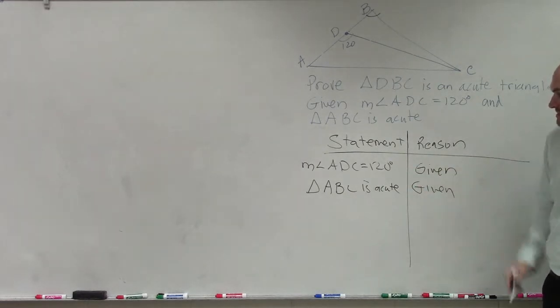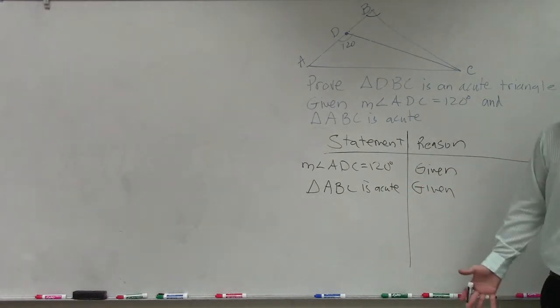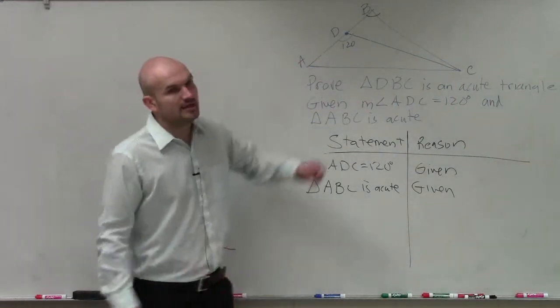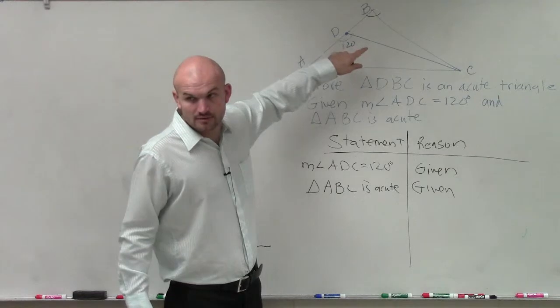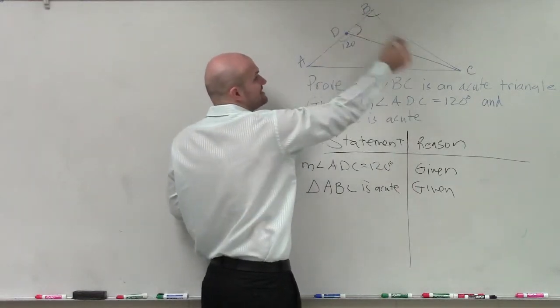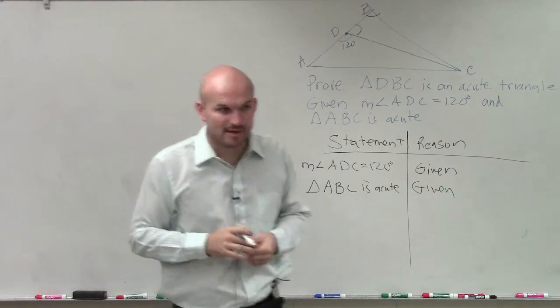So we know that ABC is acute. Now, a couple other things we want to look into. If this is acute, Carly, flip it over. If this is 120, I know that angle BDC is also going to be supplementary. Correct?